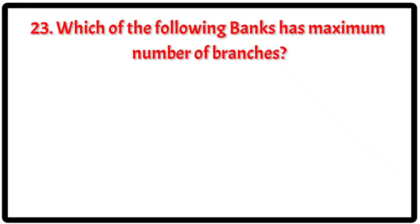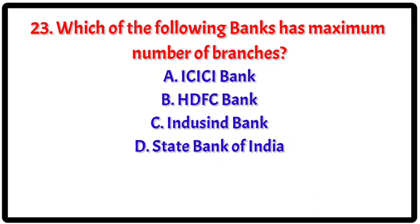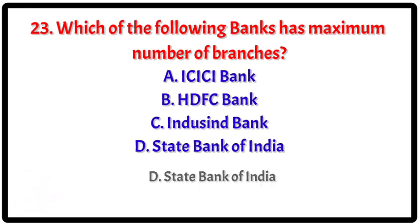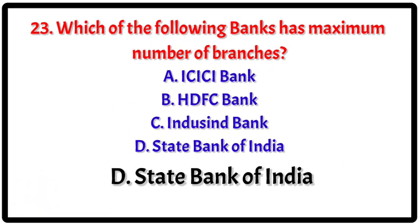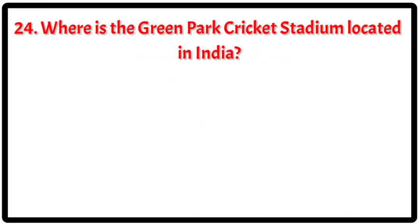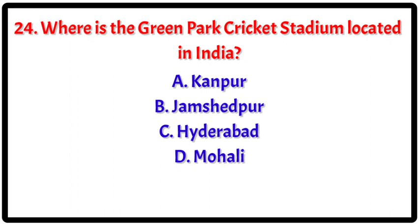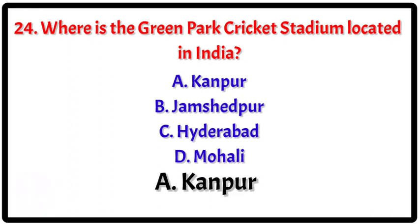Question 23: Which of the following banks has the maximum number of branches? Your options. The correct answer is D — State Bank of India. Question 24: Where is the Green Park Cricket Stadium located in India? Your options. The correct answer is A — Kanpur.